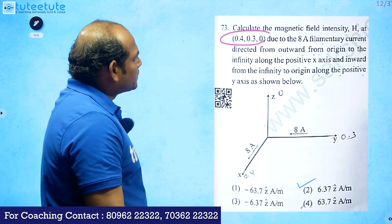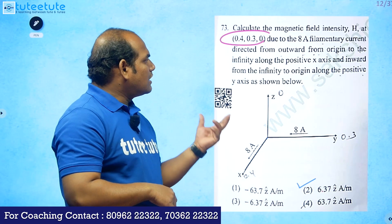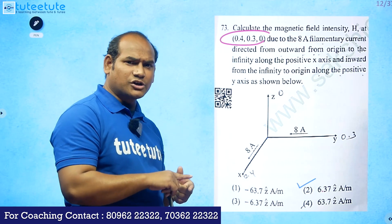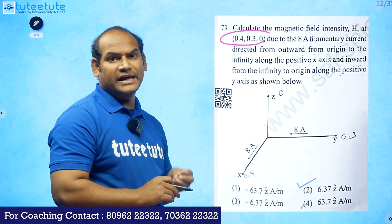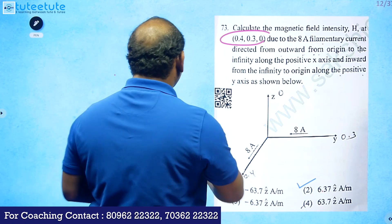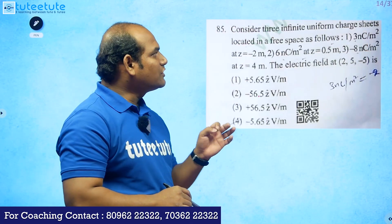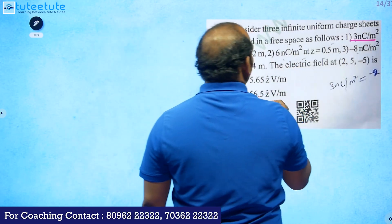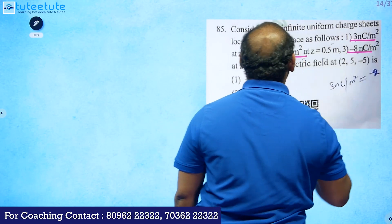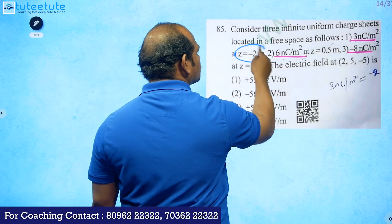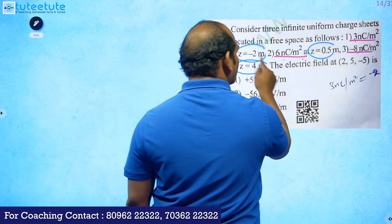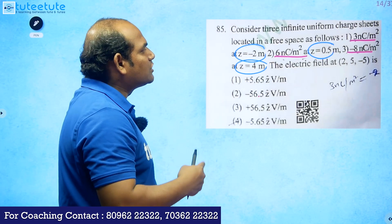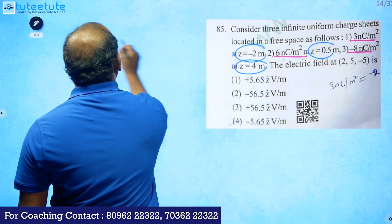The next problem involves three infinite uniform charge sheets in free space: ρ_s1 = 3 nC/m² at z = −2, ρ_s2 = 6 nC/m² at z = 0.5, and ρ_s3 = −8 nC/m² at z = 4. We must calculate the electric field at (2, 5, −5).